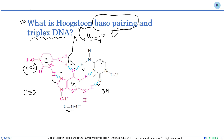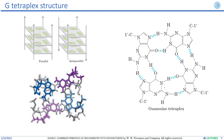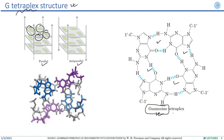This is a PDB file showing how Hoogsteen base pairing between a C-G-C triplex looks. There is also a unique phenomenon: the DNA tetraplex or G-tetraplex structure, which may be parallel or antiparallel. Four guanine nucleotides are arranged in a planar manner forming a guanine quartet. If asked which nitrogenous base can form a DNA tetraplex, the answer is guanine.